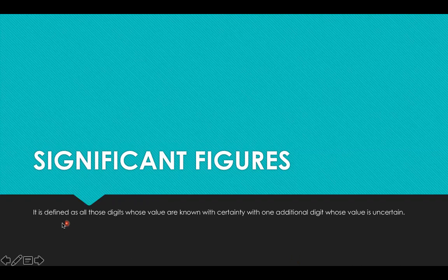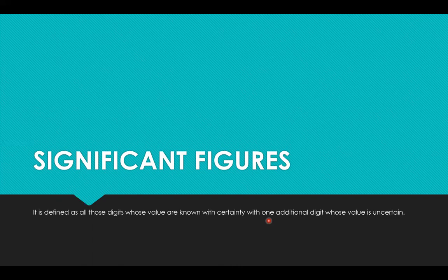Significant figures are defined as all those digits whose values are known with certainty, with one additional digit whose value is uncertain. So that means a measurement will contain a set of digits which are significant or known with certainty, and one additional digit which is an approximation or uncertain digit. That is what significant figures are comprised of in a measurement.